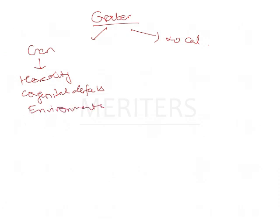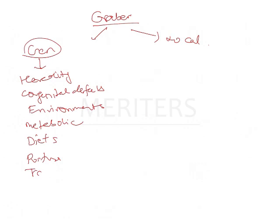Under Graeber's general factors, environmental causes include metabolic diseases such as endocrine disorders and infectious diseases, dietary causes like malnutrition, posture, trauma, and habits. So a wide variety of systemic and general factors are included under this heading.